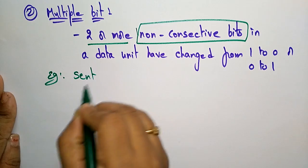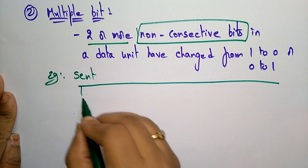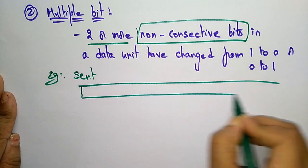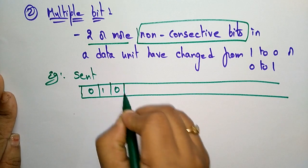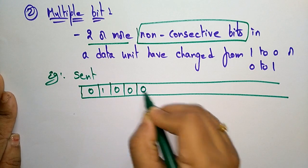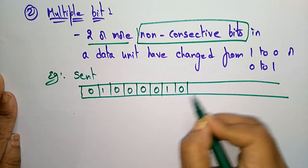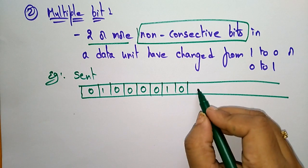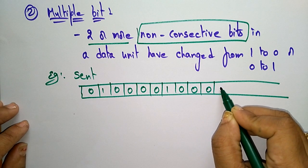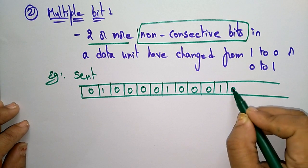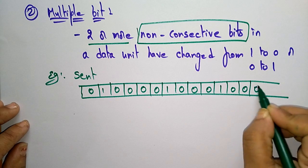Let us see the example for multiple bit error. The sender is sending 16 bits of data: 0 1 0 0 0 0 0 1.